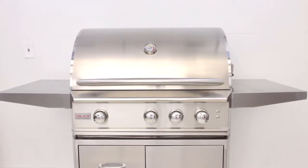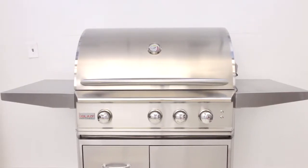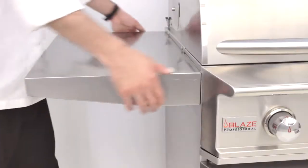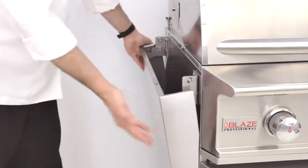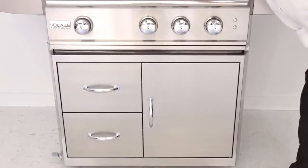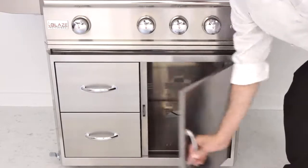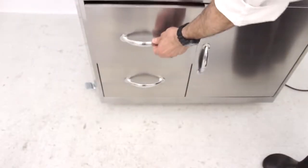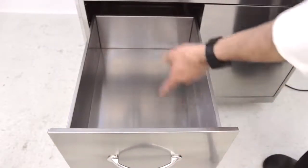For models on a cart, the two spacious side shelves give plenty of workspace and can easily fold down for convenient storage. The right side of the cart has an access door for propane storage, and on the left hand side has two spacious drawers for easy organization.